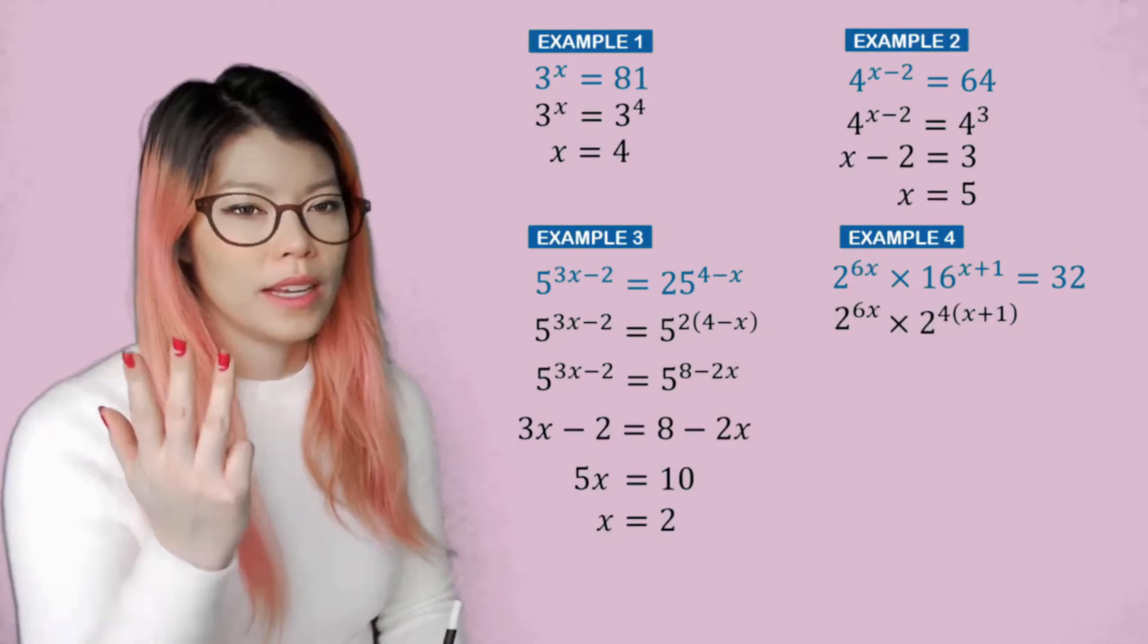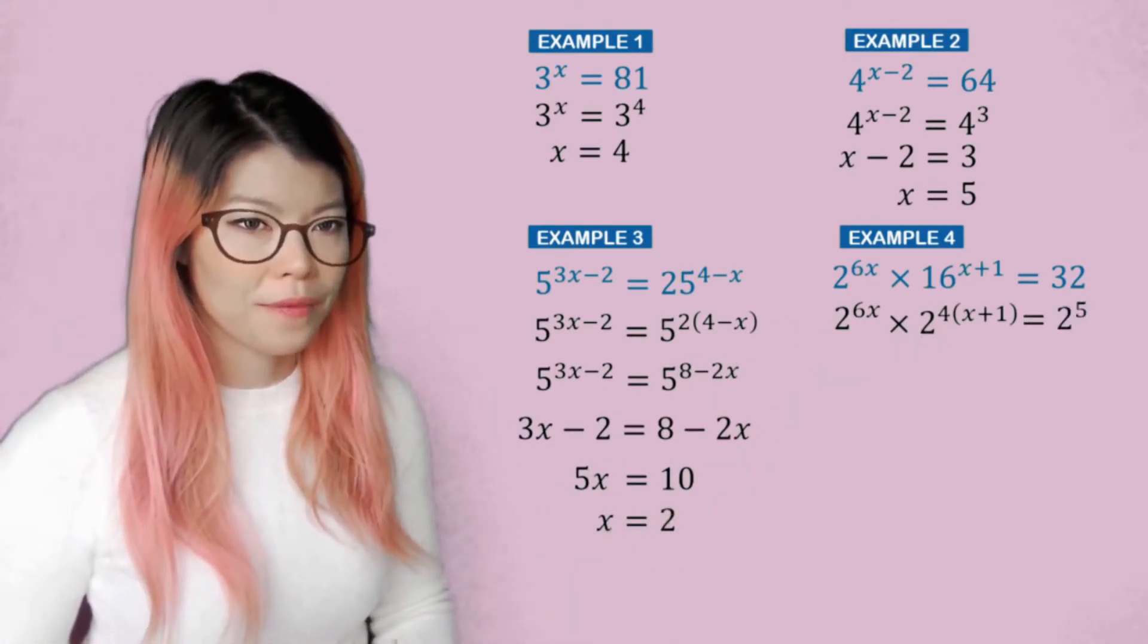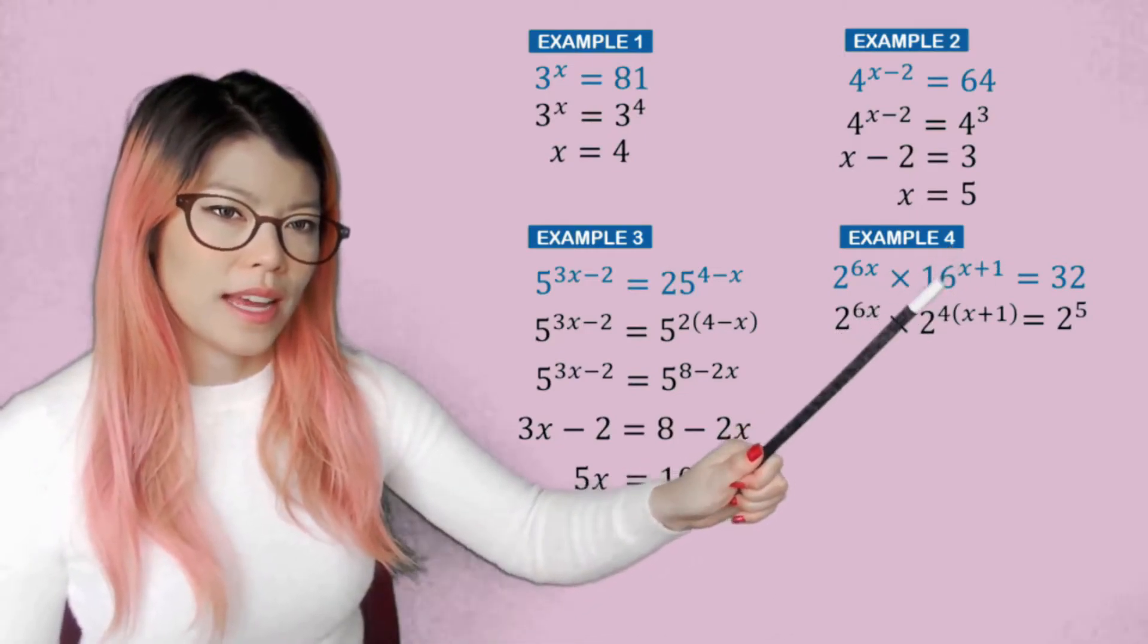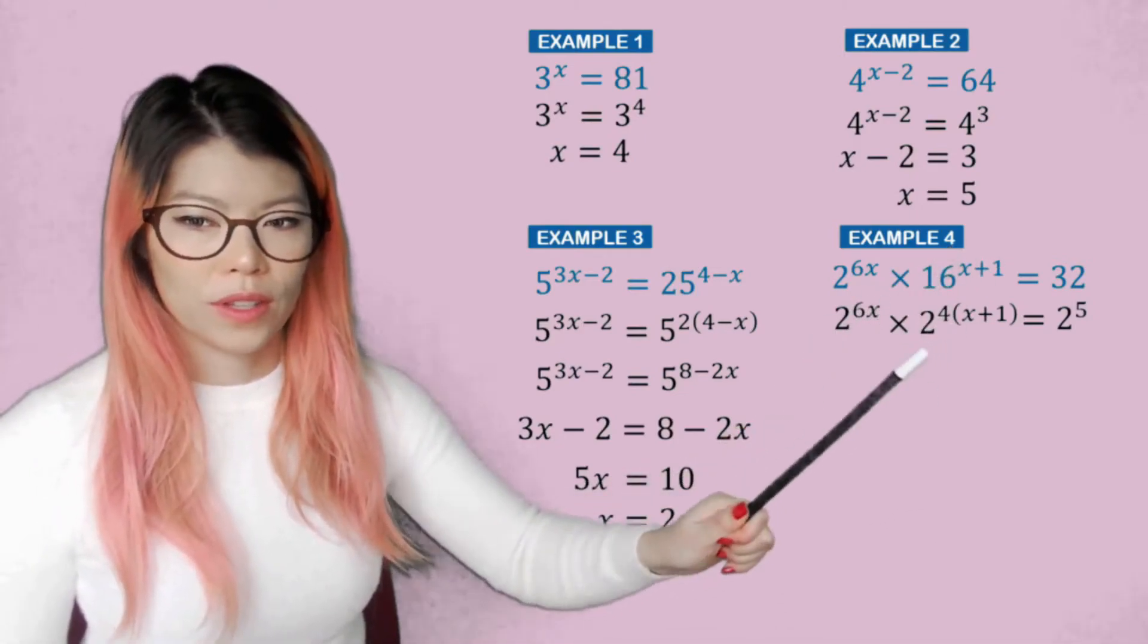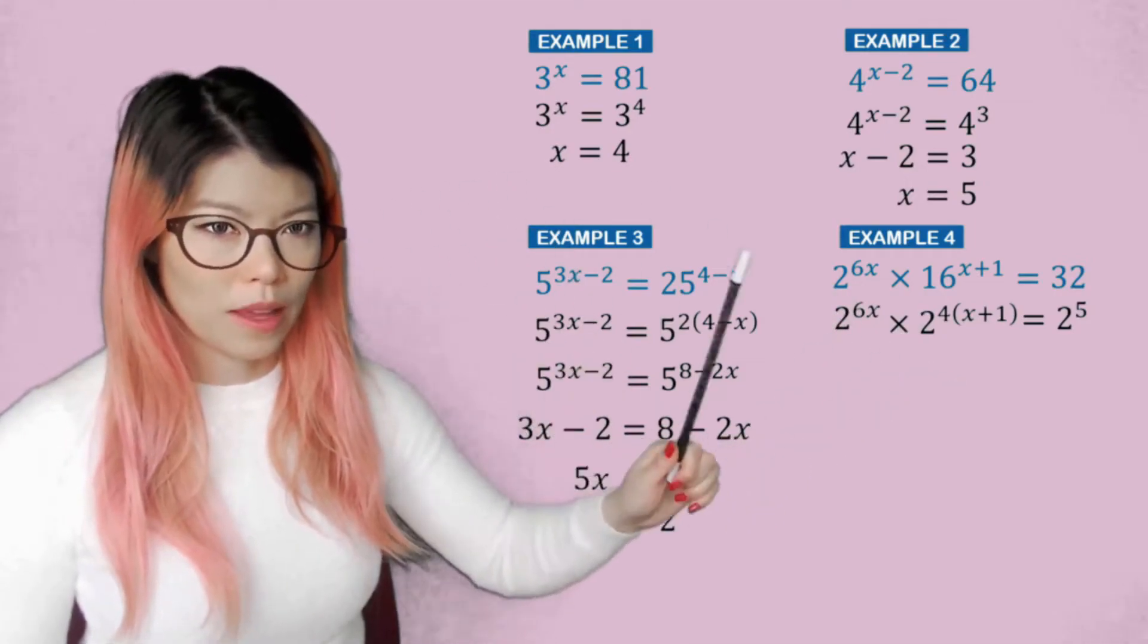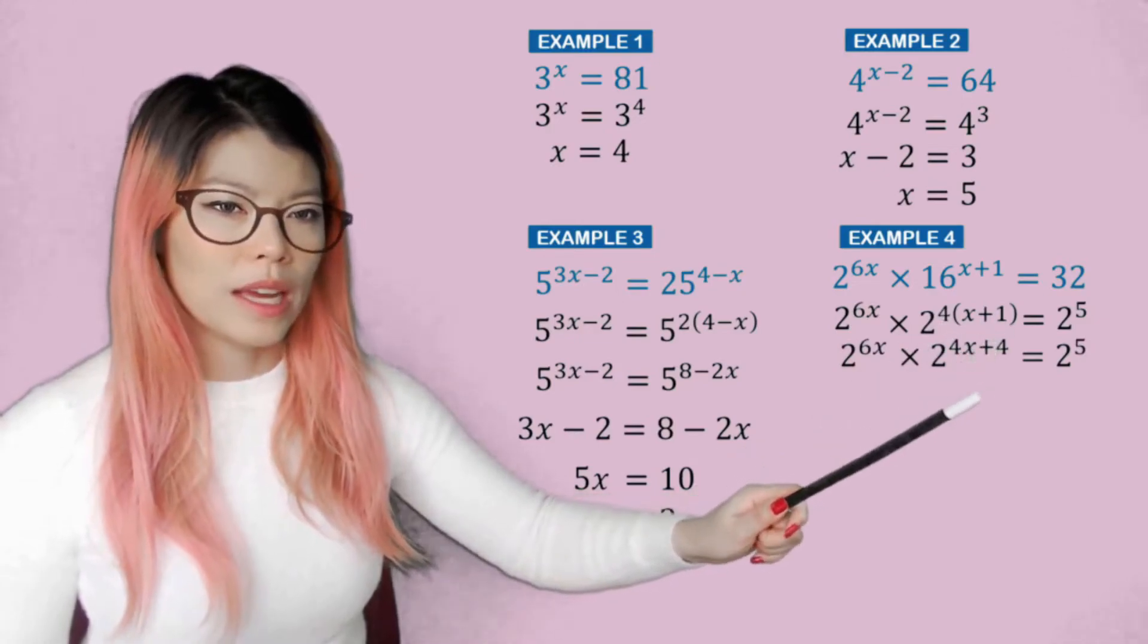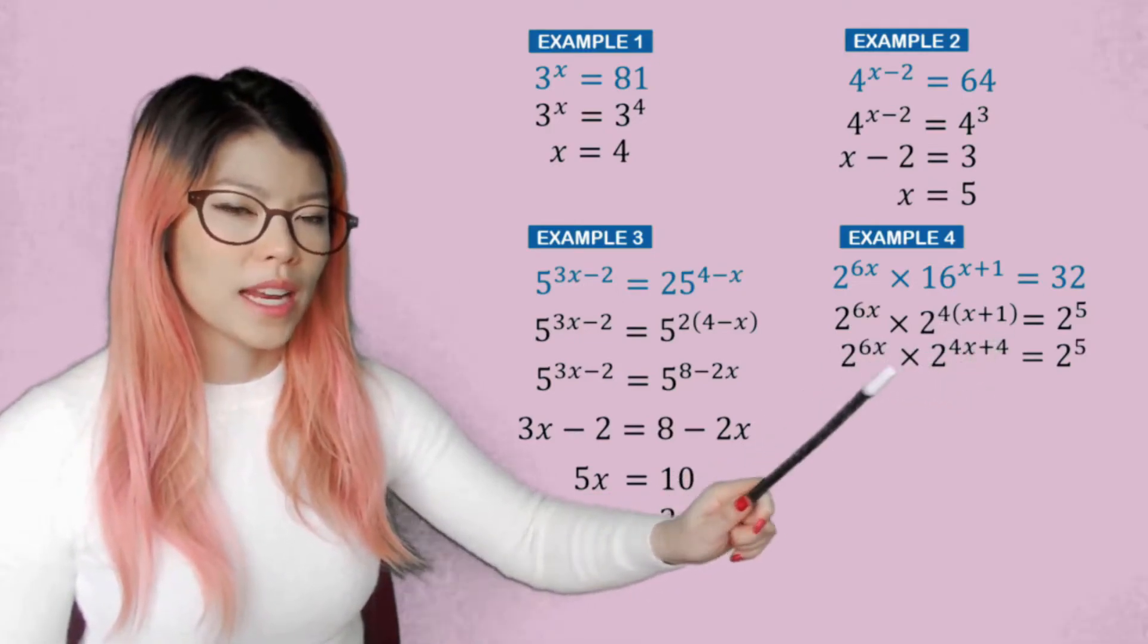And 32 is going to be 2, 4, 8, 16, 32, which is 2 to the power of 5. Now I'm going to again use brackets because I'm one of those people that prefer not making careless mistakes when thinking about multiple things.